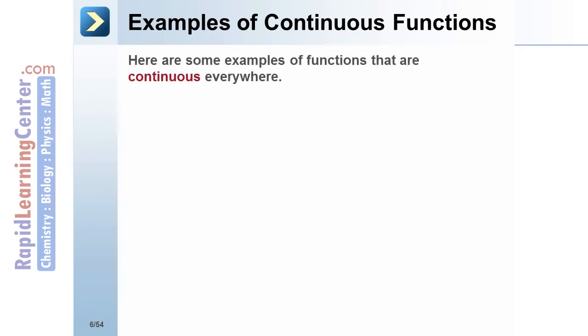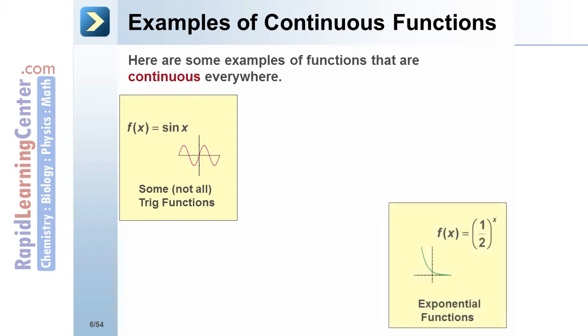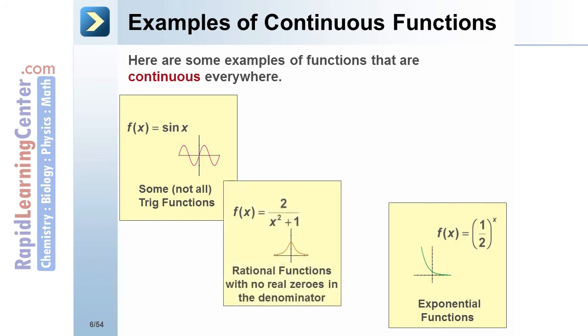Here are some examples of functions that are continuous everywhere: some, but not all, trigonometric functions; exponential functions; rational functions with no real-valued zeros in the denominator; and, of course, polynomials.